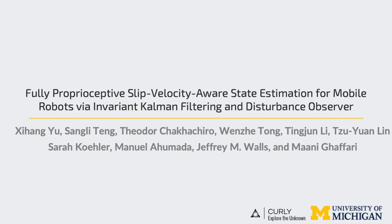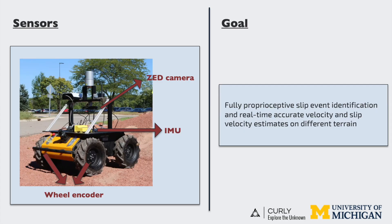In this video, we introduce a novel slip estimator using the invariant complement filter and disturbance observer to provide real-time accurate velocity and slip velocity estimation. The proposed state estimator for mobile robots is fully perceptive and combines data from an inertial measurement unit and wheel encoder.